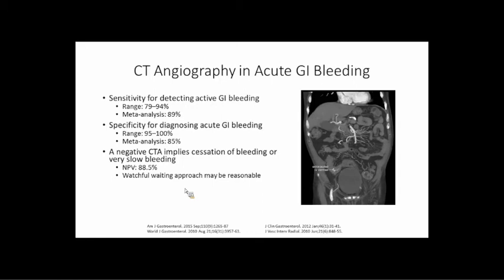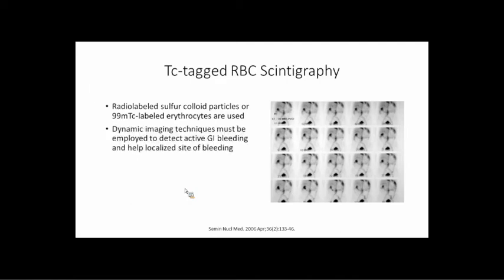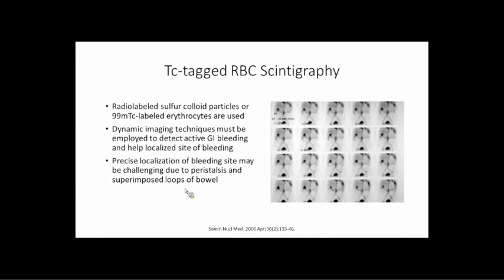The specificity of CTA is also pretty good — around 85% in meta-analysis. A negative CT angio is very reassuring; it really implies cessation of bleeding or very slow bleeding. The negative predictive value of CTA is about 88%, so if a patient has a suspected bleed and a negative CT angiogram, watchful waiting is not unreasonable. The incidence of a positive conventional angiography after a negative CTA is very low, so you may be able to save the patient from the more invasive and higher-risk conventional angiography.